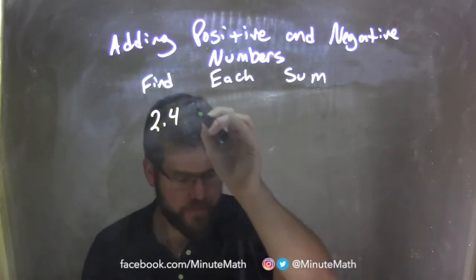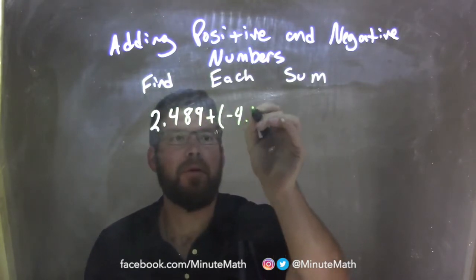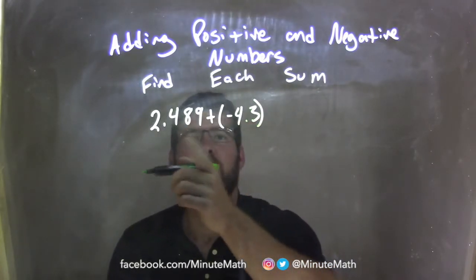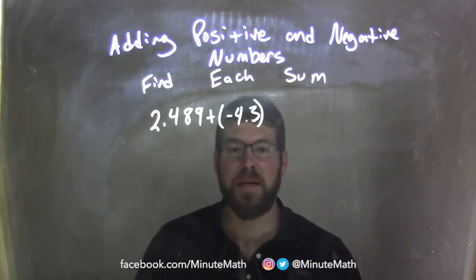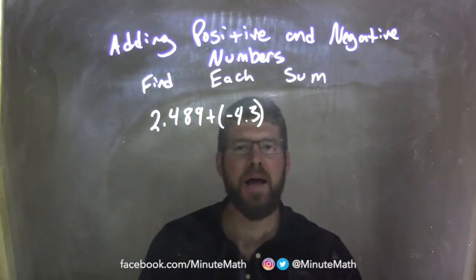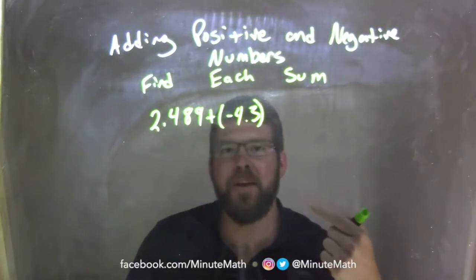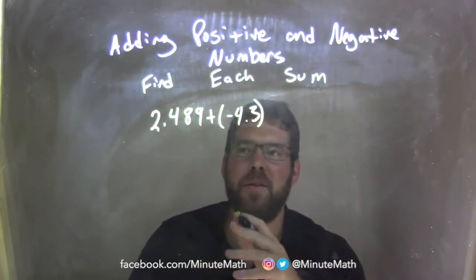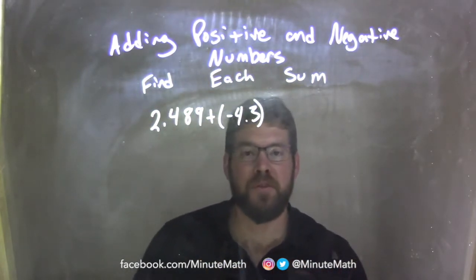2.489 plus a negative 4.3. First I think about whether my final answer is going to be positive or negative. In this case it's going to be negative — negative 4.3 has more weight than positive 2.489. Think of it like a tug-of-war around zero. If the negative is larger, the result is on the negative side. So my final answer is going to be negative.